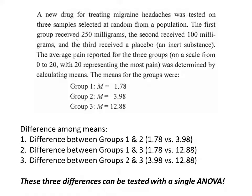Let's look at example one on text page 127. A new drug for treating migraine headaches is tested on three samples selected at random from a population. The first group receives 250 milligrams, the second group receives 100 milligrams, and the third group receives a placebo. The average pain reported is on a scale of 0 to 20, with 20 representing the most pain, meaning zero is possibly pain-free. The means were calculated for each group.